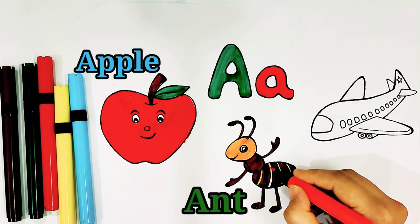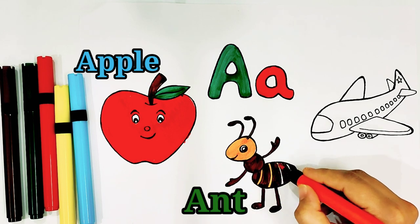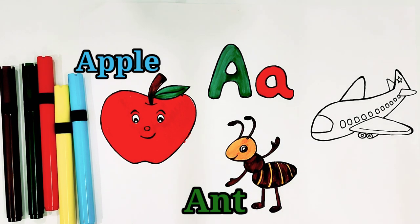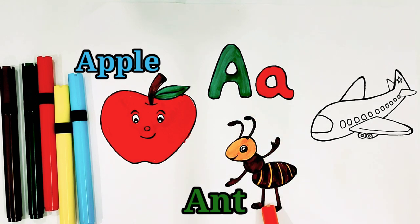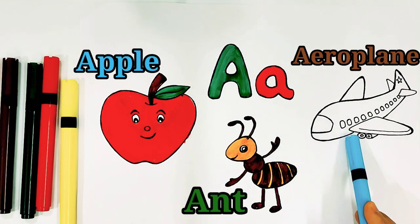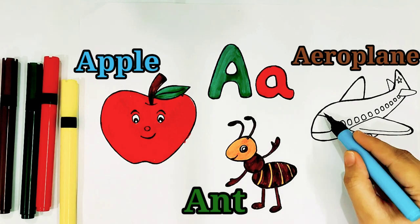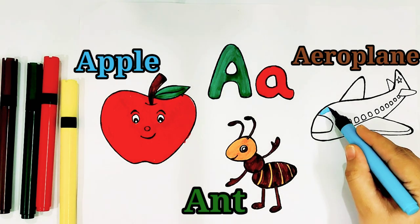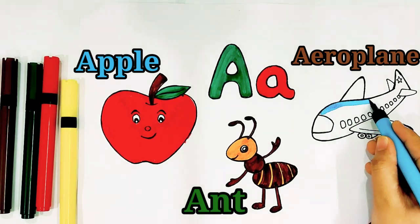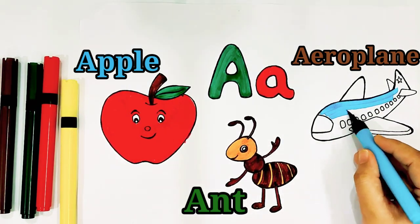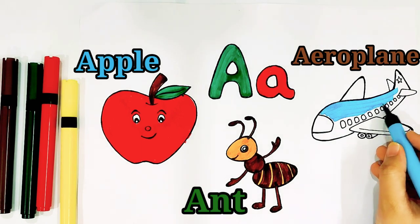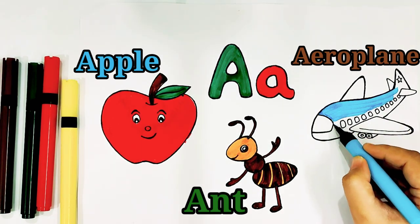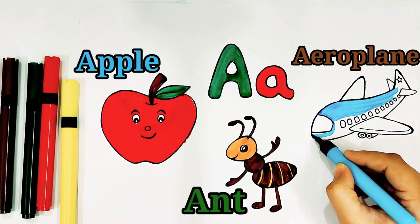A, B, C, D, E, F, G, H, I, J, K, L, M, N, O, P. E for Aeroplane. Now I know my ABCs, next time won't you sing with me?